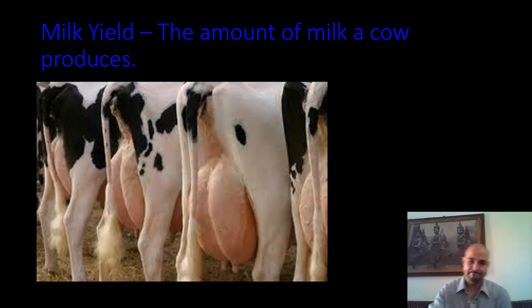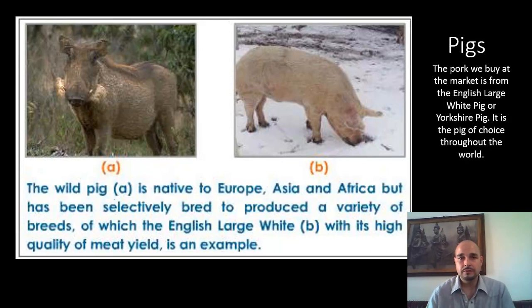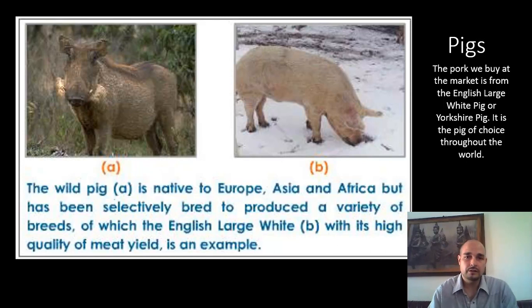Humans have been conducting selective breeding for hundreds of years. Here's an example with pigs. The picture on the right is a wild pig, which is native to Asia and Europe. And the picture on the right is a Yorkshire pig, also called an English large white pig. Over hundreds of years — about 200 years or more — we have been breeding pigs.